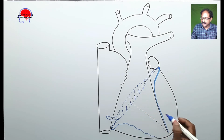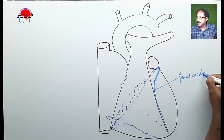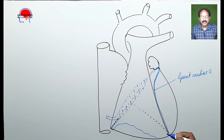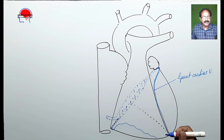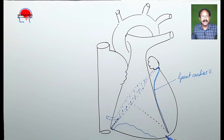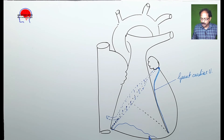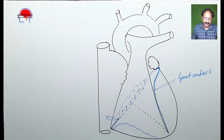Basically, the coronary sinus is a continuation of the great cardiac vein, which is in fact the largest tributary of the coronary sinus. Morphologically the coronary sinus is a continuation of the great cardiac vein, which accompanies the artery in the anterior interventricular groove — that is the anterior interventricular artery, a branch of the left coronary artery. This other vein is named the small cardiac vein, which is accompanied by the marginal artery and ends in the right end of the coronary sinus.